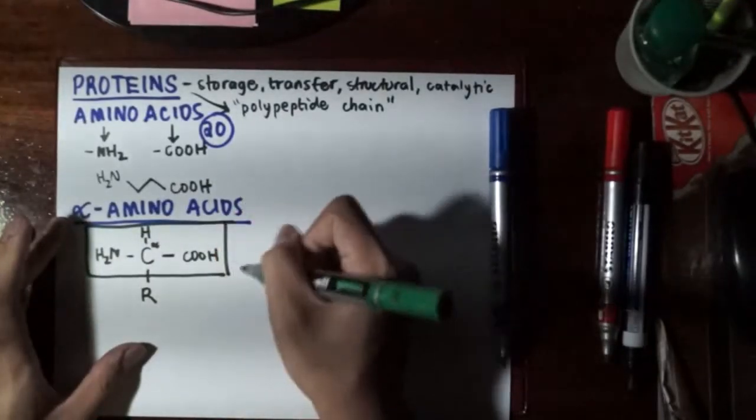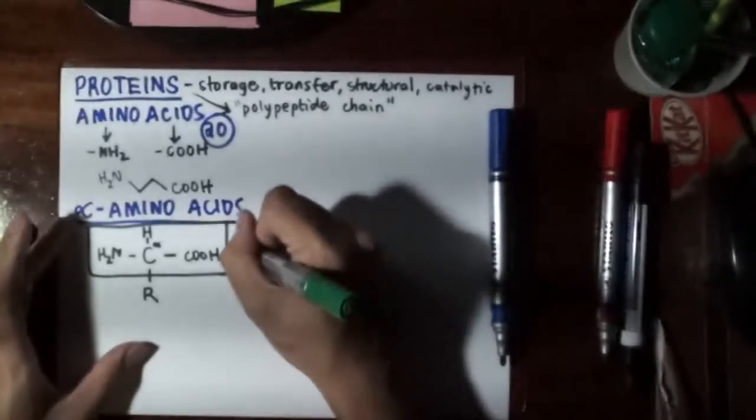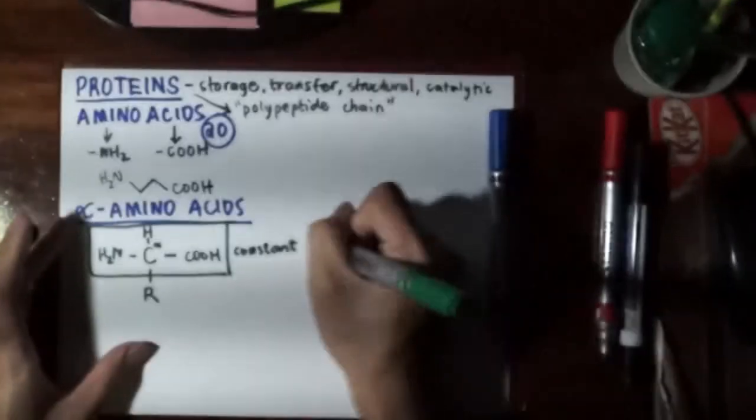What I want to say here is that all of this—the alpha carbon and the two functional groups—will always be present in all these 20 amino acids. This one is constant. It doesn't change and should not be removed from the 20 amino acids.